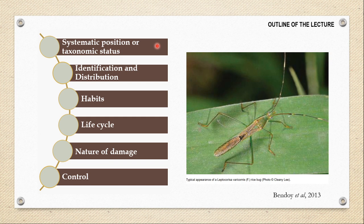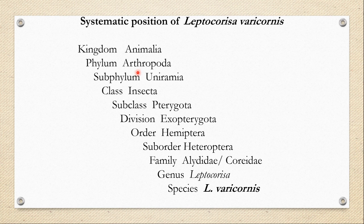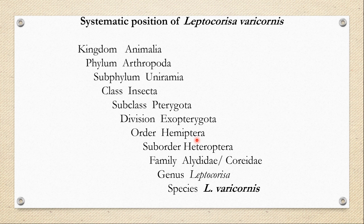Leptocoryza variconis belongs to phylum Arthropoda, subphylum Uniramia, class Insecta, subclass Pterygota, division Exopterygota, order Hemiptera, suborder Heteroptera, family Alydidae, genus Leptocoryza, species Leptocoryza variconis. It belongs to order Hemiptera because it has piercing and sucking mouthparts as well as a very apparent triangular scutellum on its mesonotum. It belongs to suborder Heteroptera because it has a hemi-elytral type of wing.